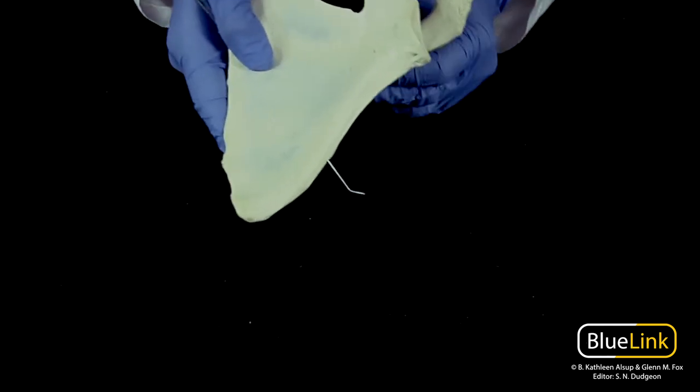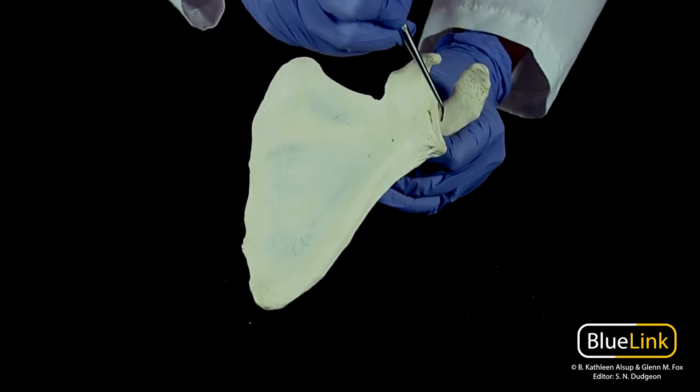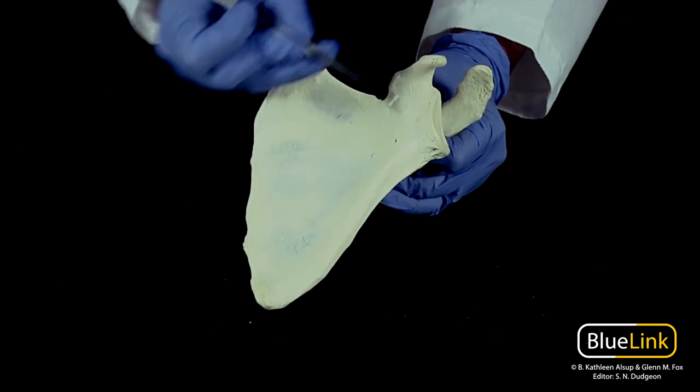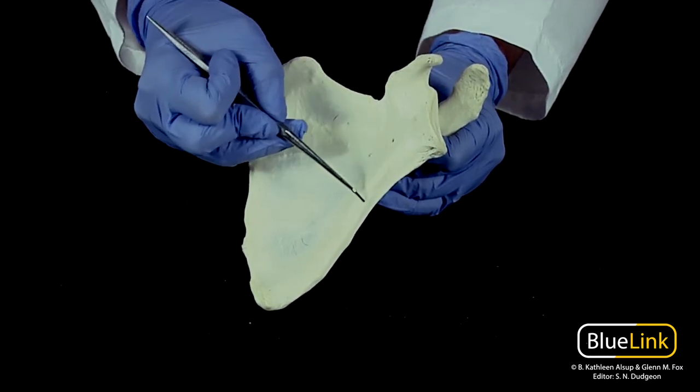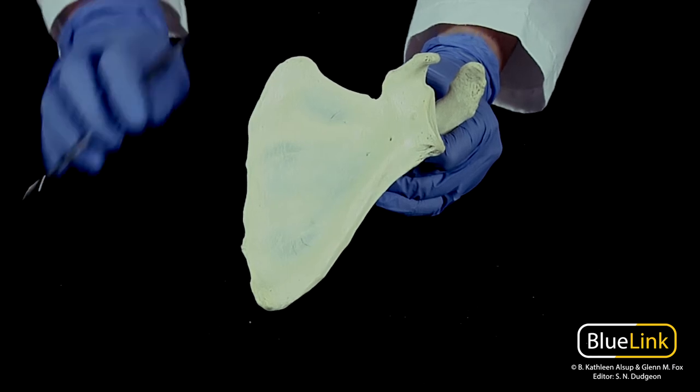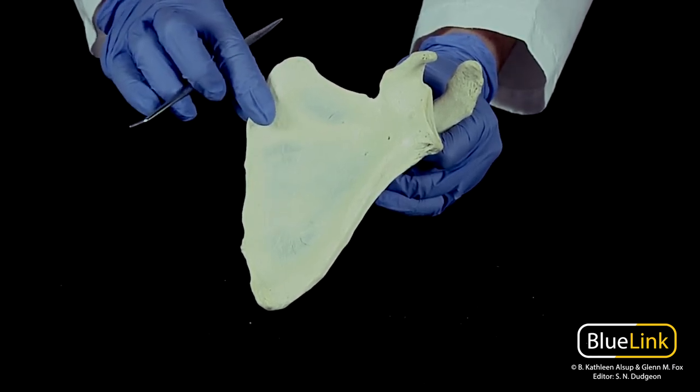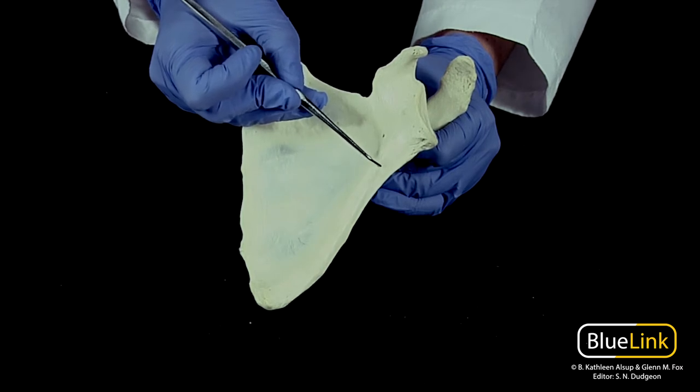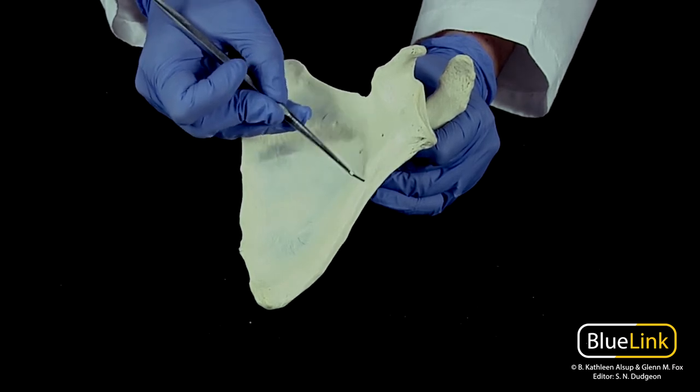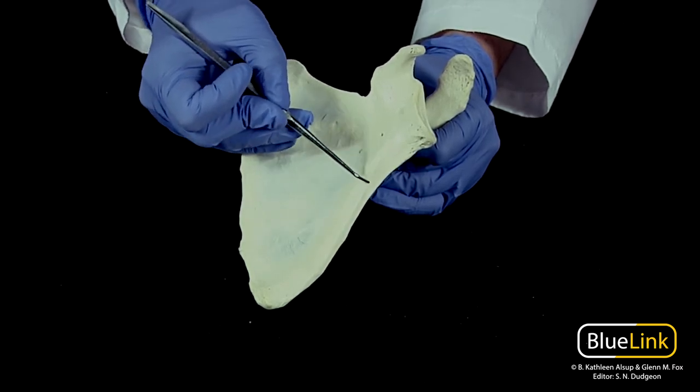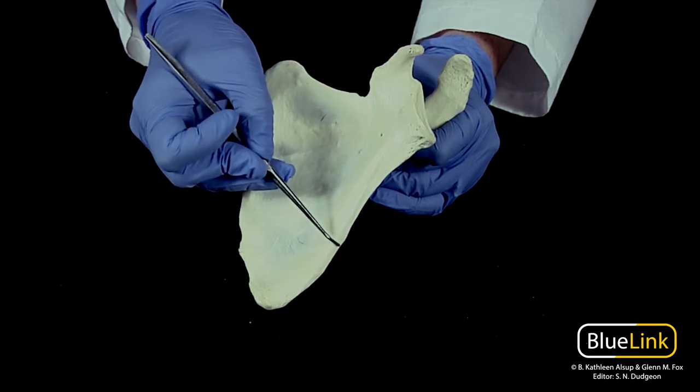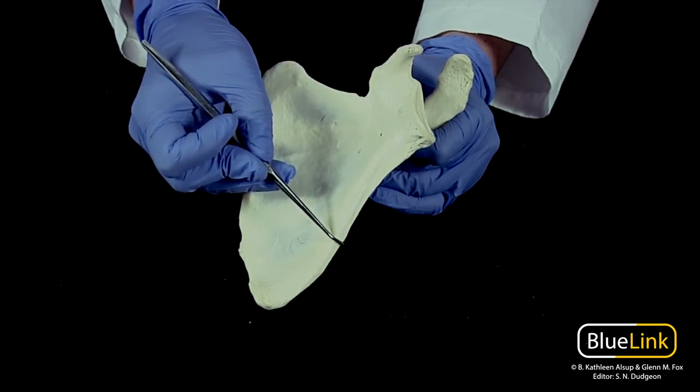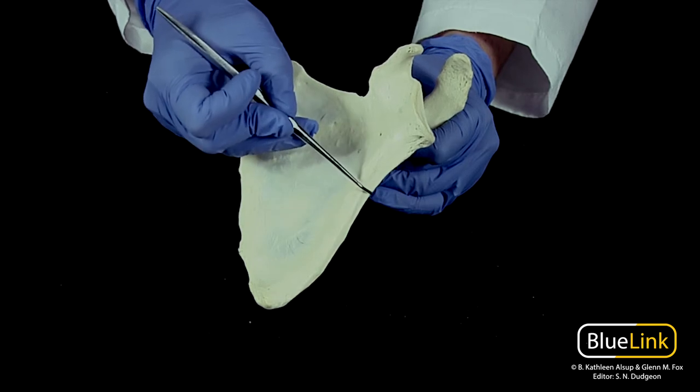Now looking at the lateral border, so remember associated with that glenoid cavity, your lateral border is going to be much thicker than the counterpart on the medial side. This is because it's going to prevent buckling due to all the stress in this region, so a much stronger portion of the bone right here. Teres major and teres minor will have attachment sites here.